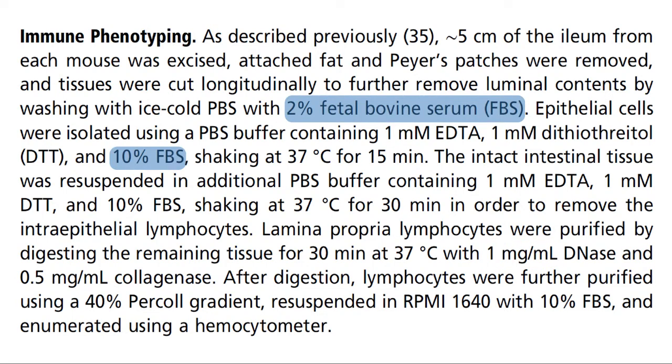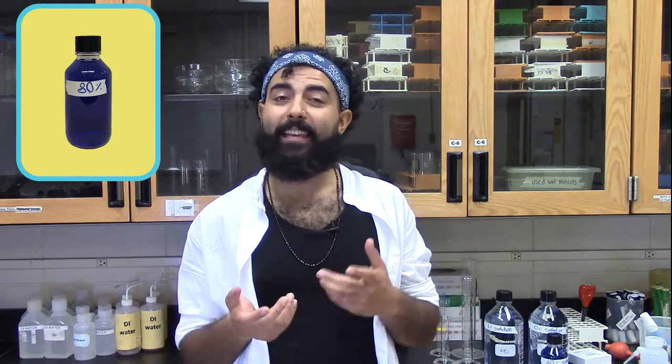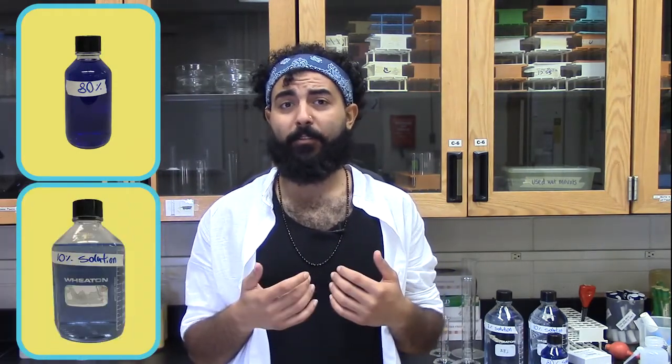Notice that they describe concentration at least three different ways. And this component, FBS, they use it at two different concentrations. To be efficient, instead of storing multiple containers of the same solution but different concentrations, we store a concentrated solution known as the stock solution and then dilute it to our desired concentration.